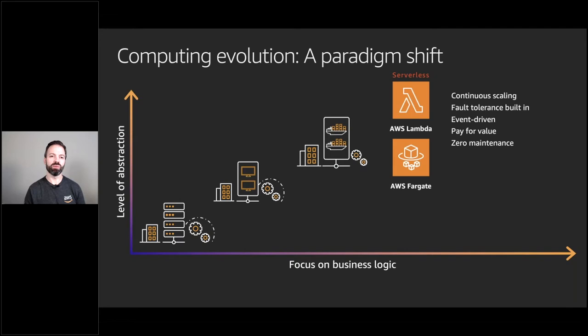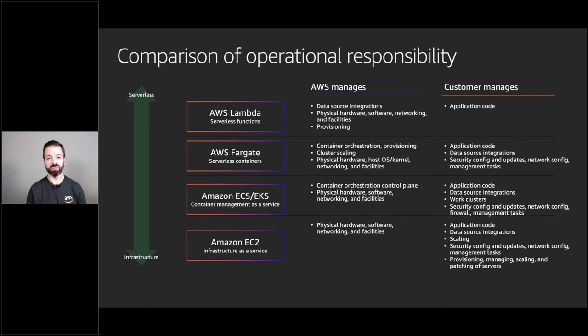With an even higher level of abstraction, AWS Lambda allows you to focus on application code and logic only. You choose when and how that code is executed. Serverless provides continuous scaling, built-in fault tolerance, and pay-for-value — you only pay for the time your code runs. Comparing operational responsibility from EC2 to ECS to Fargate to Lambda: the higher the abstraction, the more AWS manages, and the more you can focus on making a great game.